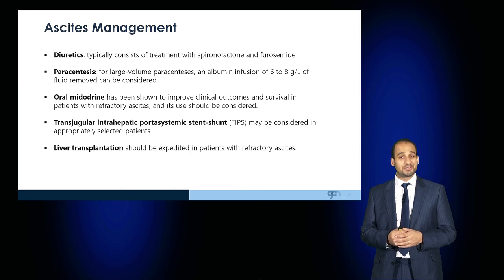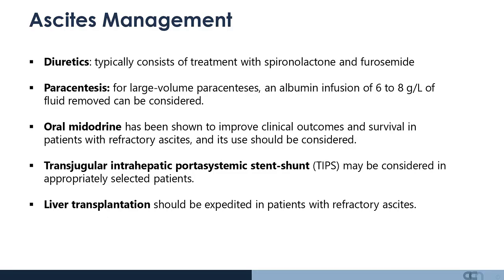Oral midodrine has also been shown to improve clinical outcomes in patients with refractory ascites. If despite medication and dietary interventions the patient has ongoing ascites, they may require a TIPS procedure — transjugular intrahepatic portosystemic stent shunt. And if all else fails, the patient should be considered for liver transplantation.